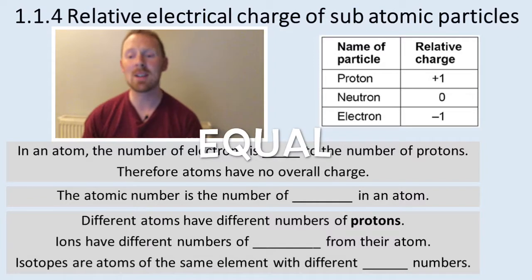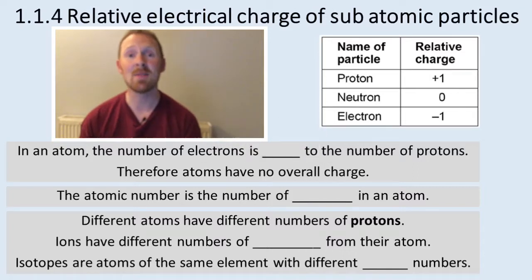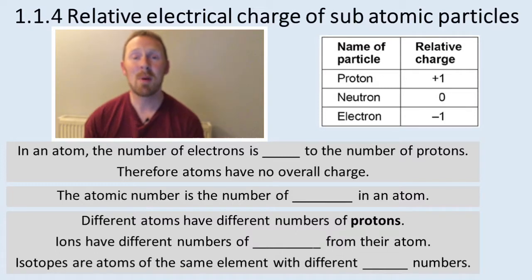Now in an atom, the number of electrons is equal to the number of protons. So if you've got the equal number of positive and negative subatomic particles, therefore atoms have no overall charge. Remember, this is atoms. Atoms don't have a charge.